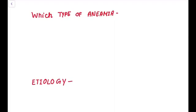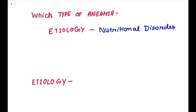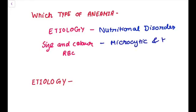Which type of anemia is iron deficiency anemia? From etiology point of view it is nutritional disorder. On the basis of size and color of RBC it is microcytic, hypochromic anemia.